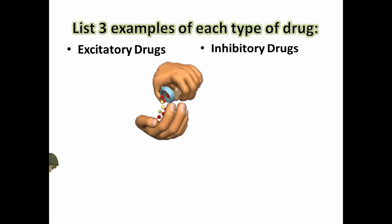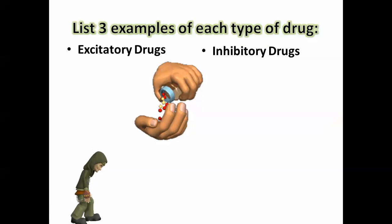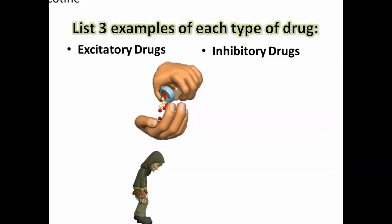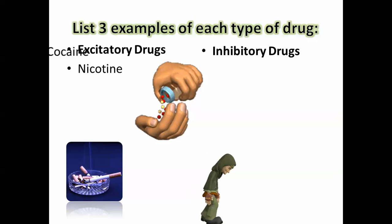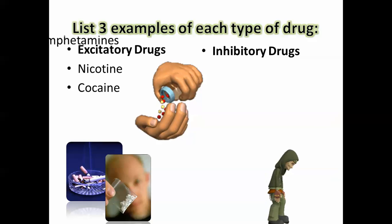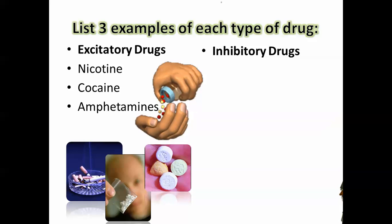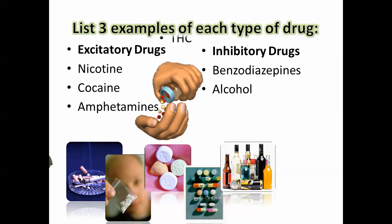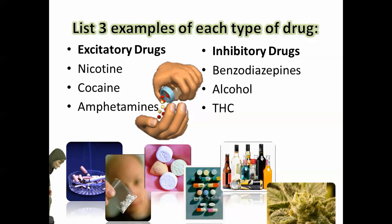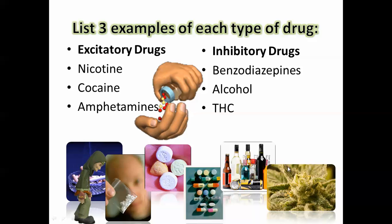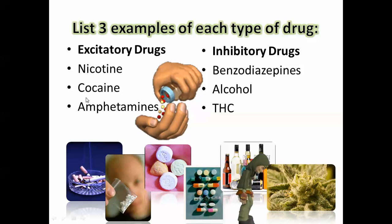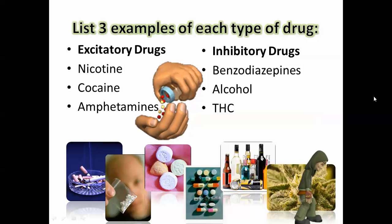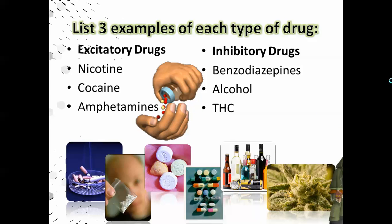Excitatory drugs versus inhibitory drugs: cocaine is excitatory and marijuana is inhibitory. Other excitatory drugs include nicotine and amphetamines. Inhibitory drugs include benzodiazepines, which are loosely classified as sleeping pills, alcohol, and THC, the active ingredient in marijuana. Crystal meth fits into the excitatory category if you've been watching Breaking Bad — and I wouldn't consider doing what Walter White does.